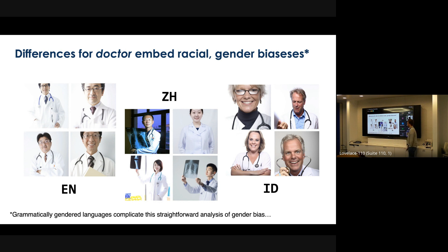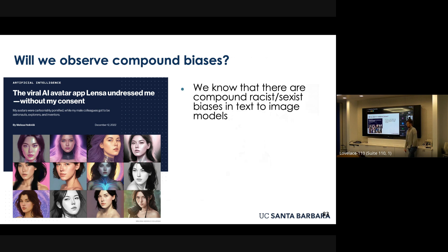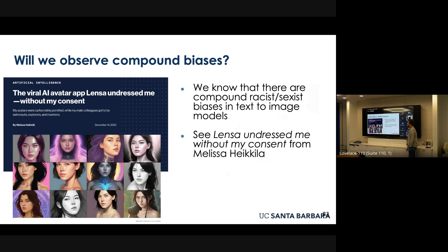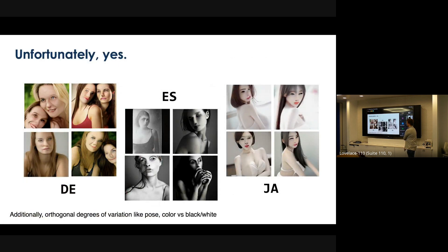Maybe it's okay to encode the default expectations of a population, but what about when there are racial biases or gender biases? Those are also being encoded naturally in the data distribution. There was a very impactful piece in MIT Tech Review about compound racial and sexual biases in text-image models, where the author found that when using a toy app — where you put a picture of your face and say 'imagine me as an astronaut' — it was consistently generating sexualized pictures of her. We do observe these compound biases at the language level, where there's an interaction between the default ethnicity selected by models differing between languages and the sexualization biases — indeed, pictures in Spanish and Japanese are more sexualized than pictures in German.